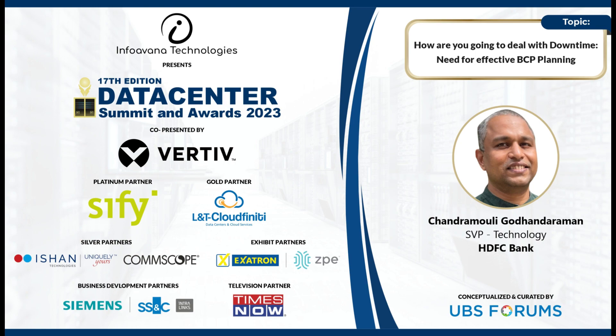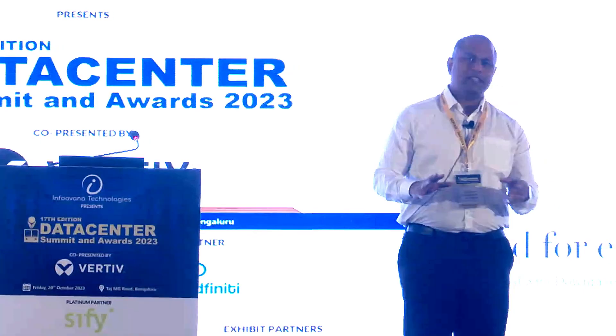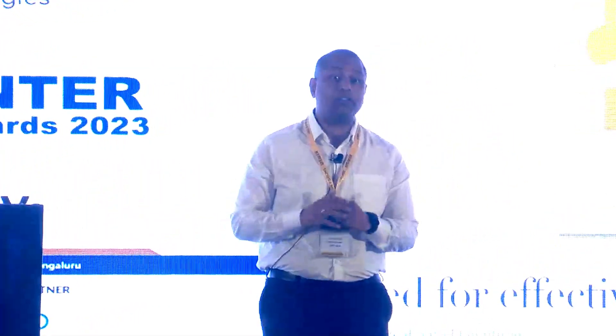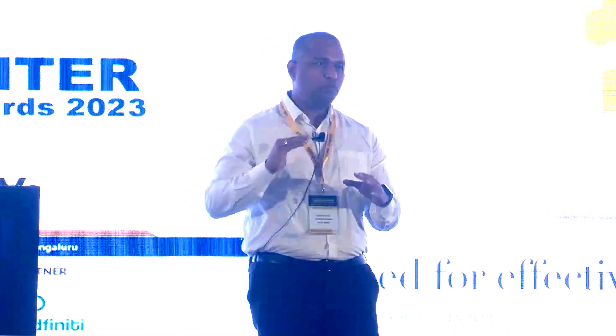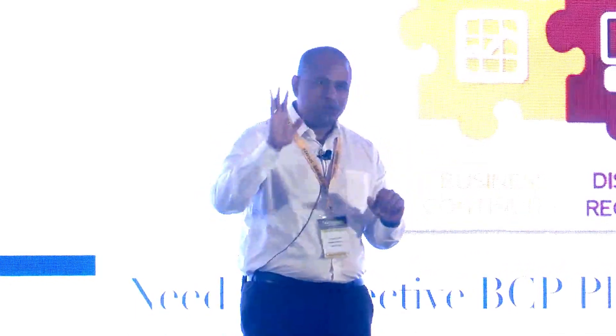A very good morning everyone. I would go back to basics, because I'm someone who believes in doing a lot of things at the basic level. I want it to also be interactive. Can someone tell me what does BCP or DR mean to you? So it should continue without failure. What is the availability number — five nines, six nines, four nines? Where do you see your organization being? Is it five nines, four nines, three nines? Yes, five nines.